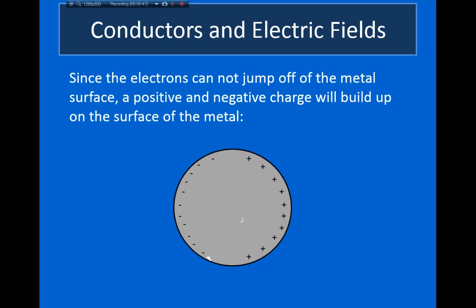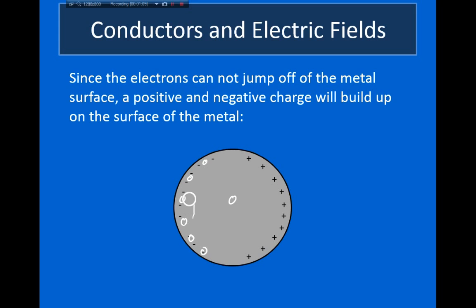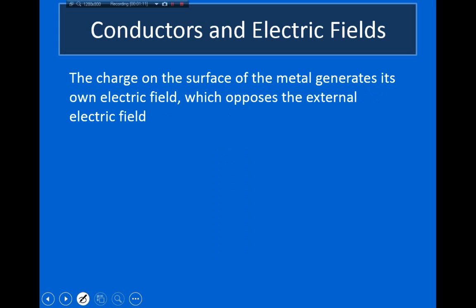And because the metal is originally neutral, the right side of the metal becomes positively charged. Additionally, because electrons repel one another — because they all have like charges and are all negatively charged — as more and more electrons start to form on this left side of the metal, they'll repel other electrons. So an electron is going to feel a repulsive force from these electrons on the surface.